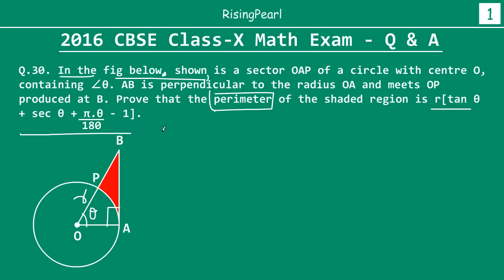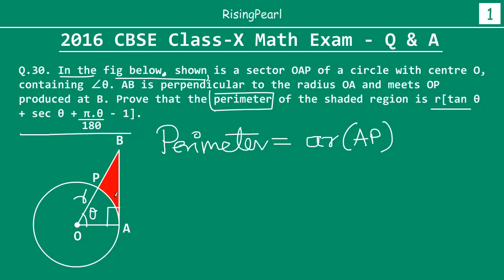So what is the perimeter of the shaded region? The perimeter will be equal to the length of arc AP, plus PB (the length of side PB), plus the length of side AB. That is really the perimeter we need to find. So we have to find the arc length AP, the length PB, and the length AB. AB and BP are straight lines, but AP is an arc.